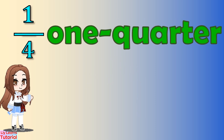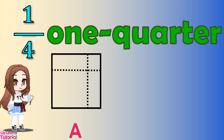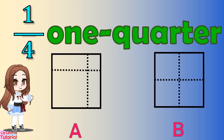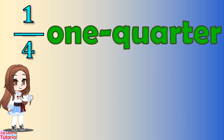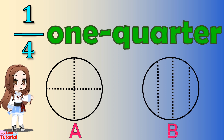Which of these shapes has been cut exactly in quarters? If you picked shape B, you are correct! Let's go ahead and color one quarter. Which of these shapes has been cut exactly in quarters? You're right — shape A is the correct answer. We color one quarter of the shape.